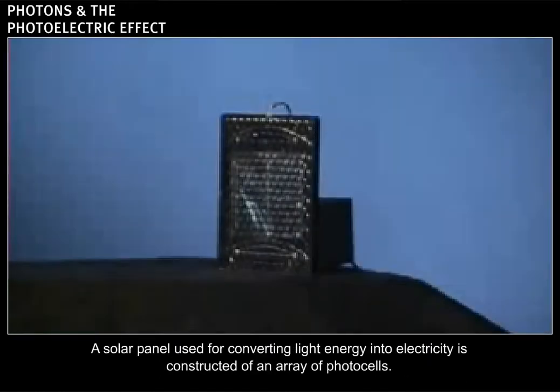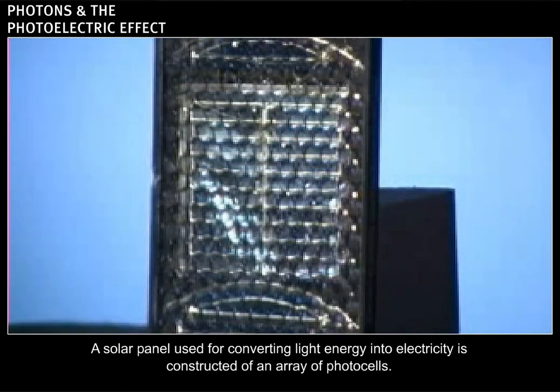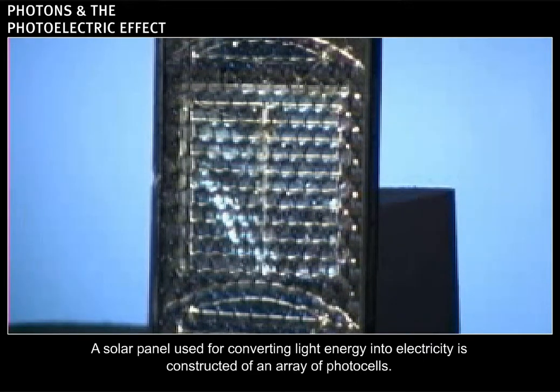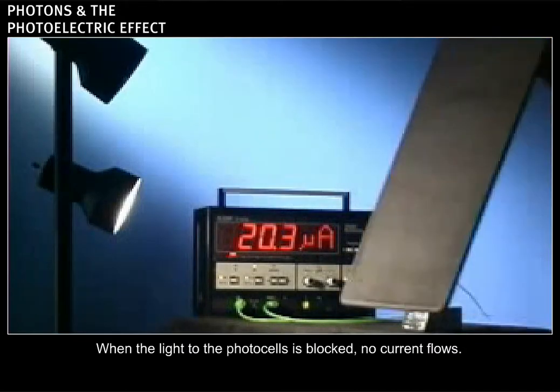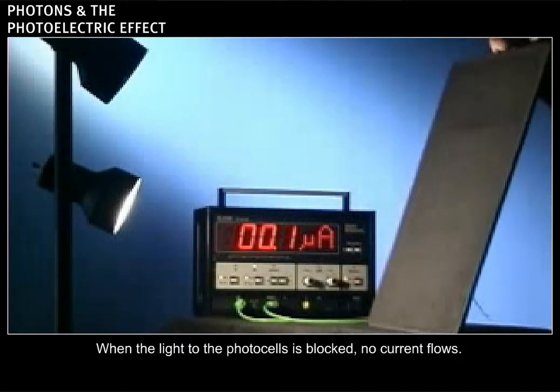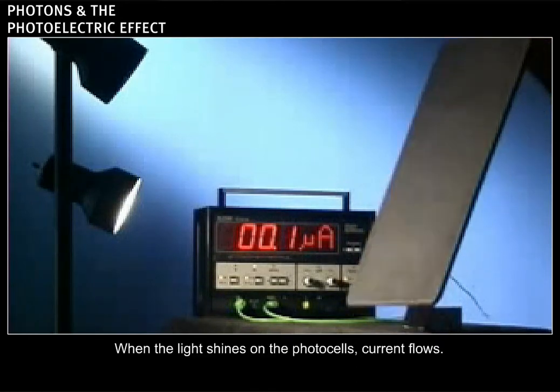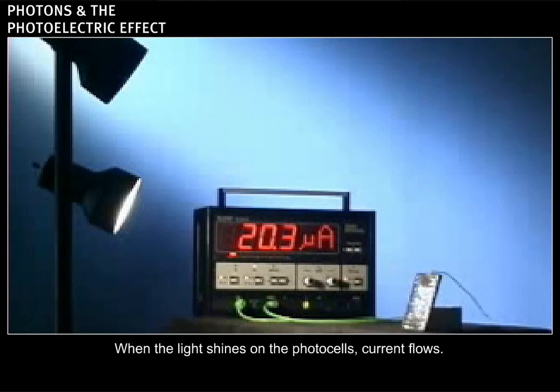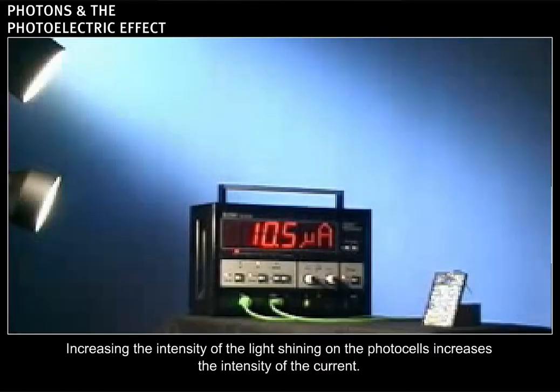A solar panel used for converting light energy into electricity is constructed of an array of photocells. When the light to the photocells is blocked, no current flows. When the light shines on the photocells, current flows. Increasing the intensity of the light shining on the photocells increases the intensity of the current.